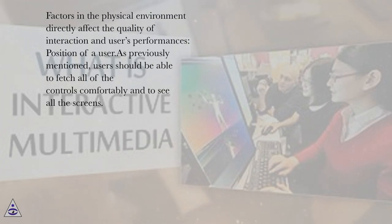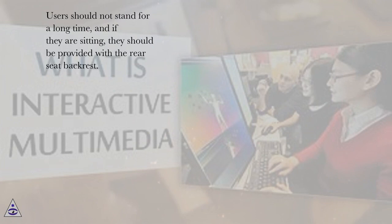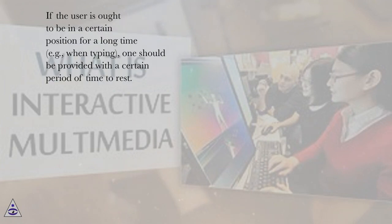Position of a user. Users should be able to reach all of the controls comfortably and to see all the screens. Users should not stand for a long time, and if they are sitting, they should be provided with a rear seat backrest. If the user is required to be in a certain position for a long time, for example when typing, one should be provided with a certain period of time to rest.